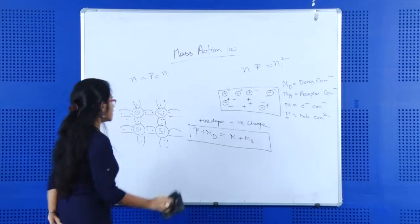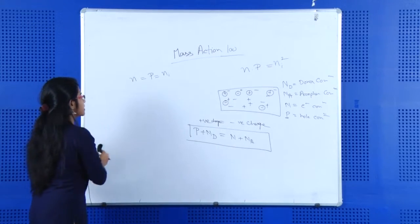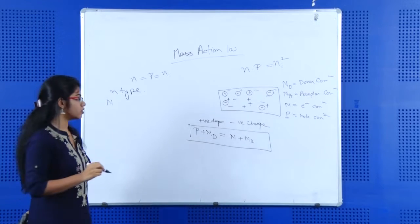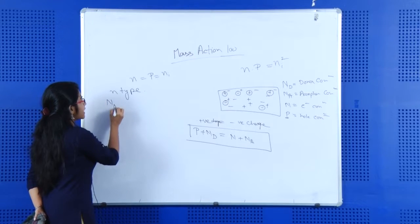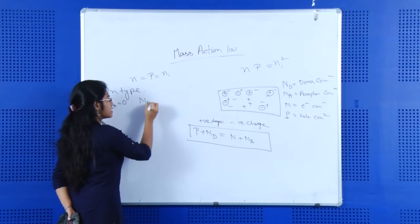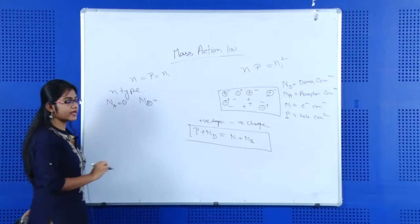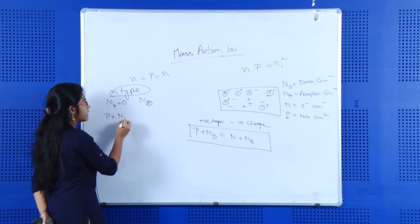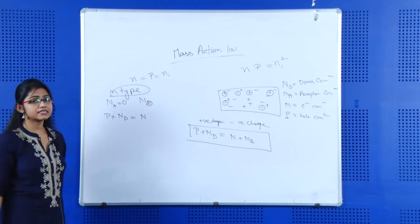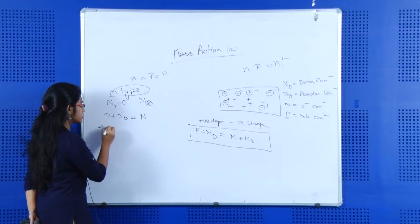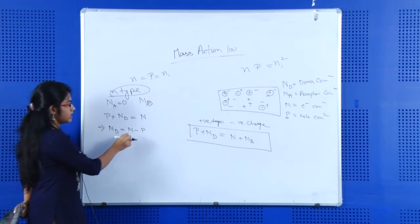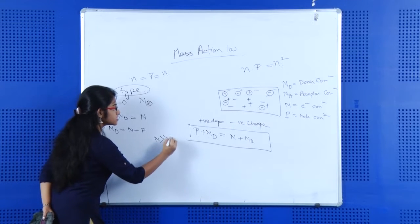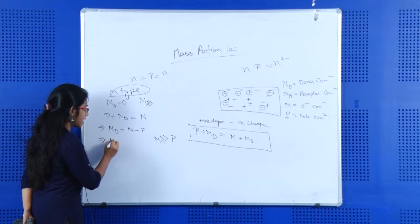In case of n-type semiconductor material, the majority charge carrier is the electron. So for n-type material, the acceptor concentration NA equals zero, and all charge carriers come from donors. We can write that the donor concentration ND equals N, because NA is zero. So ND equals N minus P, where electron concentration N is much greater than hole concentration P, and therefore ND is approximately equal to N.